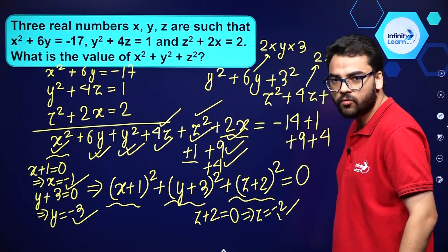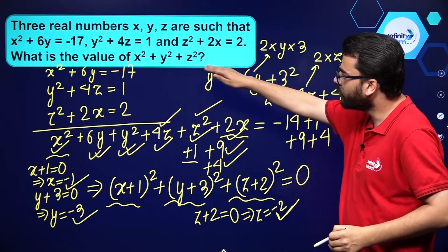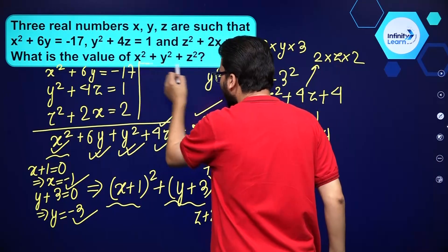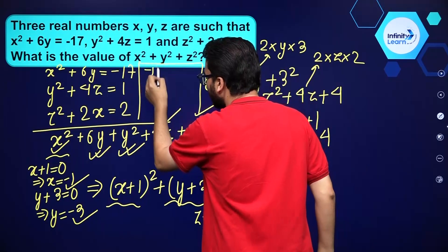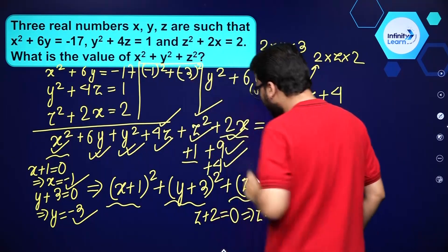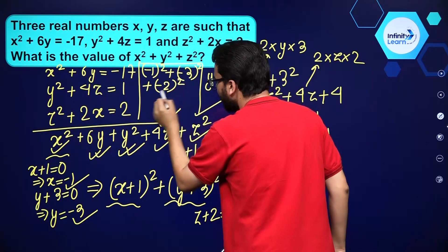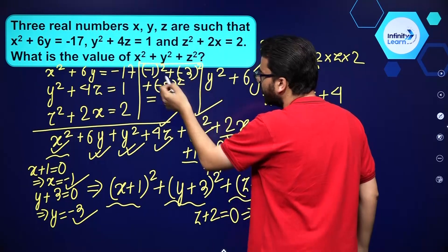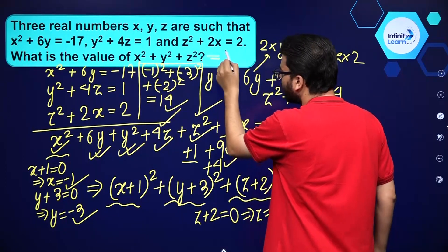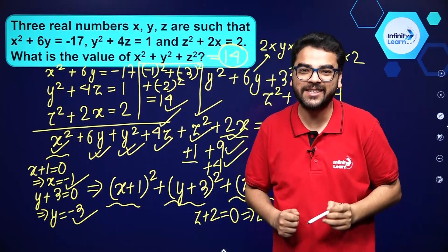So we have got x equal to minus 1, y equal to minus 3, and z equal to minus 2. We have to find the value of x square plus y square plus z square. Substituting: (minus 1) square plus (minus 3) square plus (minus 2) square, we get 1 plus 9 plus 4, which is 14. So x square plus y square plus z square is equal to 14. I hope you understood the solution to this question.